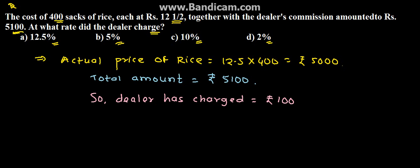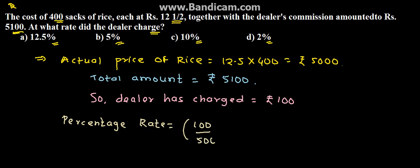Now we need to find the percentage rate. The percentage rate is equal to 100 upon 5,000 into 100, which comes to 2%. Therefore, we can say that 2% is the dealer's rate of charge. That is the solution for the given problem. Thank you.